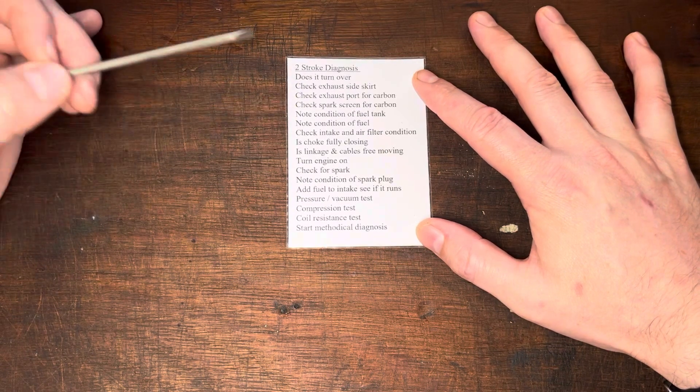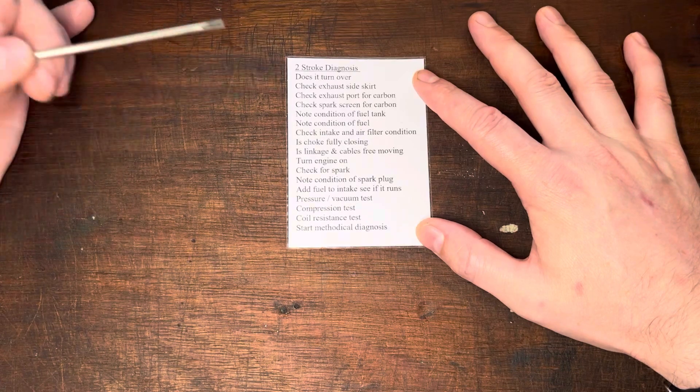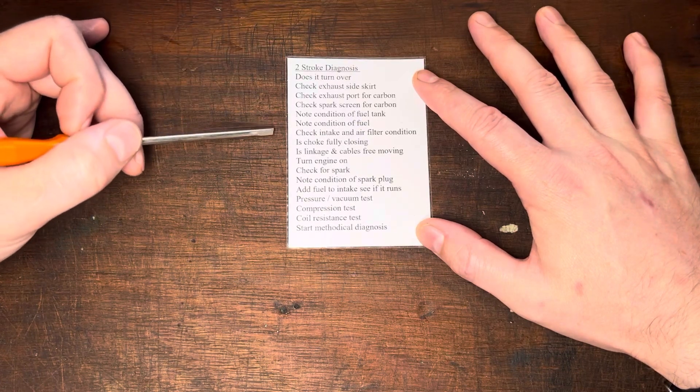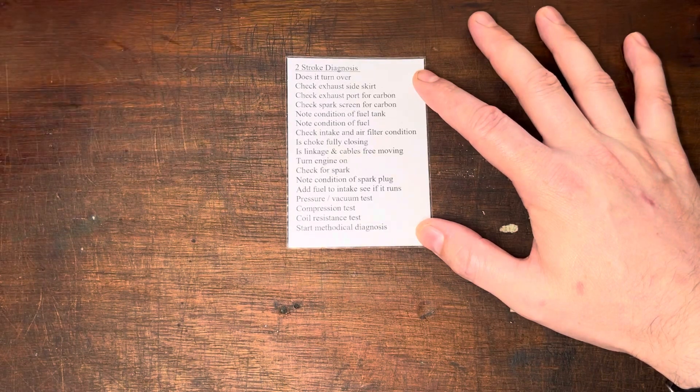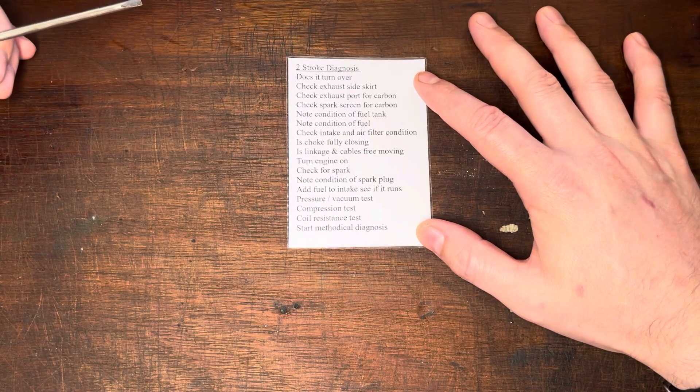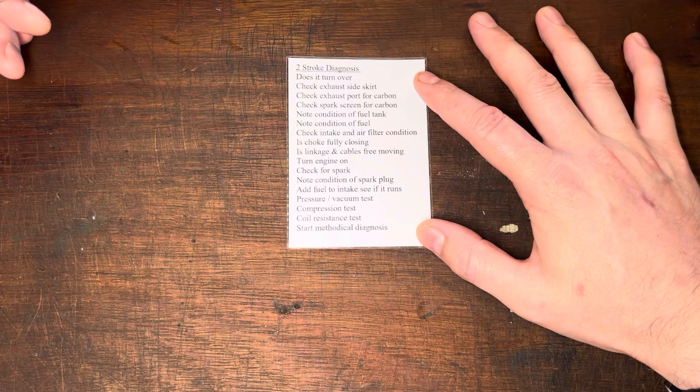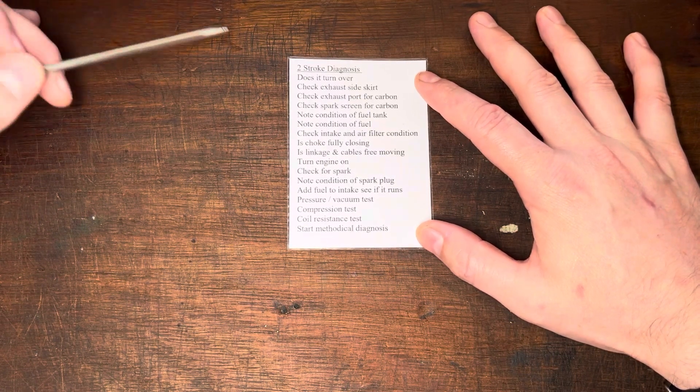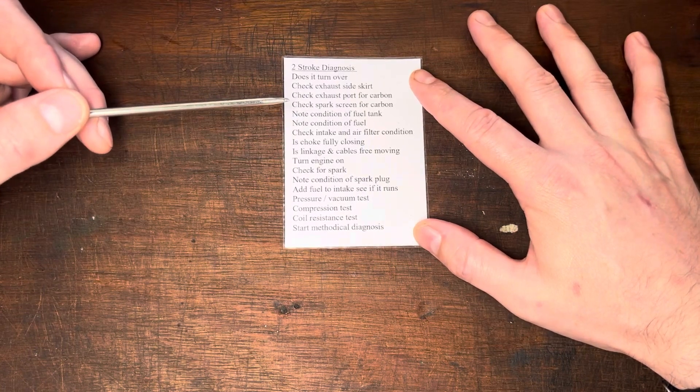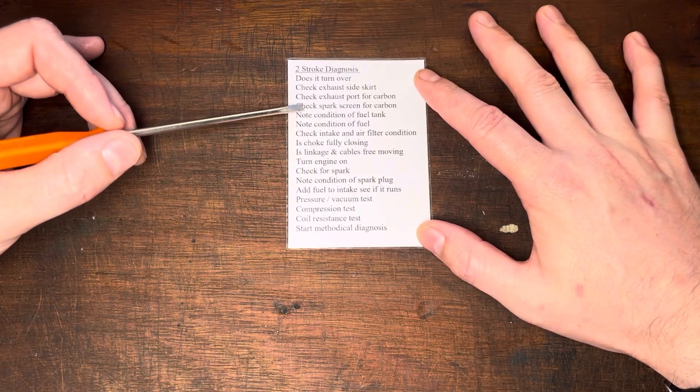Checking the spark screen for carbon too, same thing. Have a quick look, make sure it's clear, make sure you can see through it, make sure there's no restrictions. The carbon generally builds up if the engine's tuned too rich, if there's obstruction with the air filter, if the oil is cheap or if it's ran at too high of a ratio. Stale old fuel can all lead to poor combustion and the result being an increase in carbon build-up.